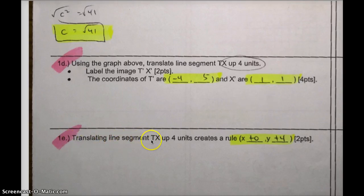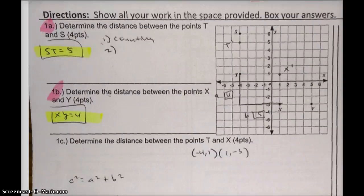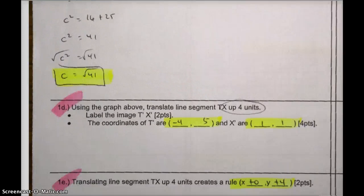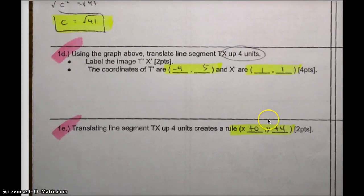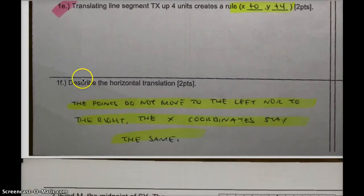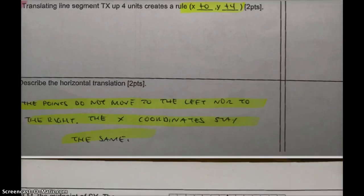1e, translating line segment TX up 4 units creates a rule. If you're going up 4 units, that only refers to the Y axis, so Y plus 4. You're not going left nor right, therefore it's plus 0. You'll recognize that the rule works. For example, if you did X at 1, negative 3: 1 plus 0 is 1, and negative 3 plus 4 gives you a positive 1. Describe the horizontal translation: the points do not move left or right. The X coordinates stay the same. So horizontal just means left or right. That one was worth 2 points, and on that page, that was worth 20.